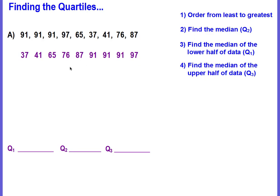This is just like normal — you can cross off the low, high, low, high until you get to the middle number. Or you can count how many pieces of data there are: there are nine. If we split it in half, we have four in the lower half, four in the upper half, and 87 is the middle number. So 87 is our median.